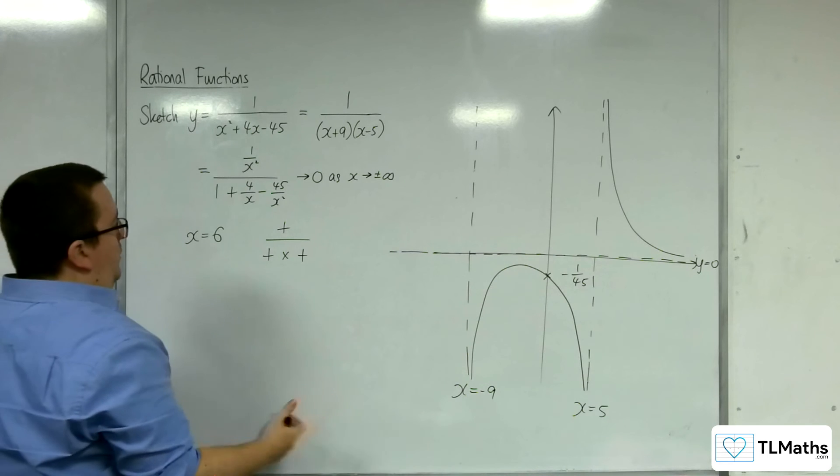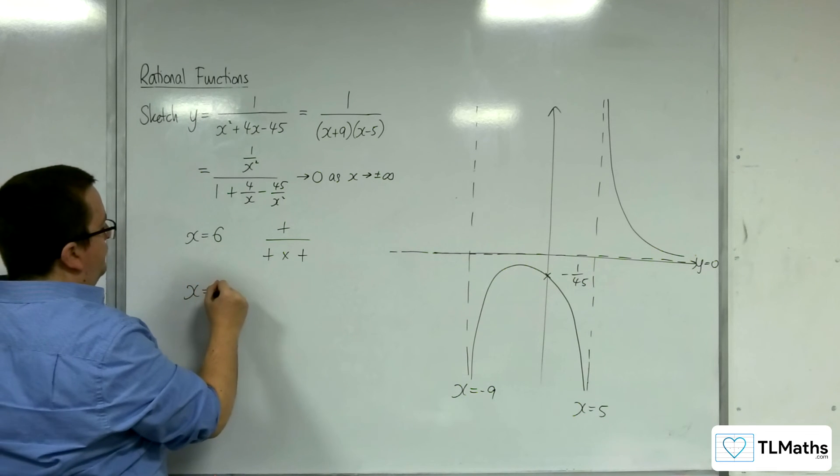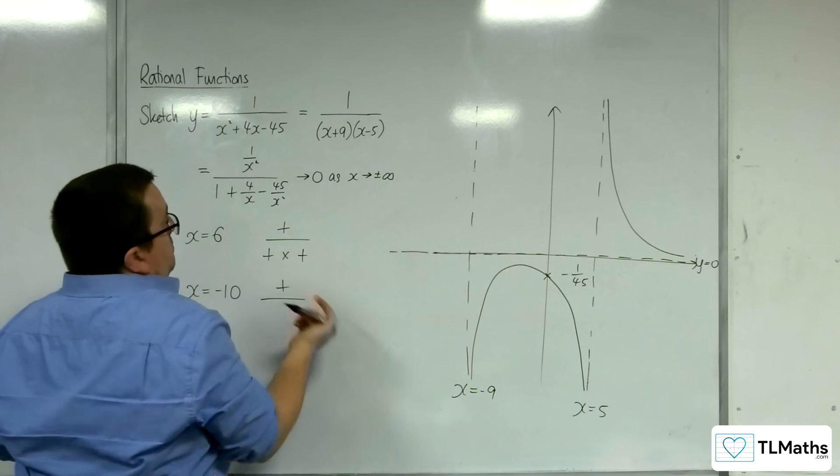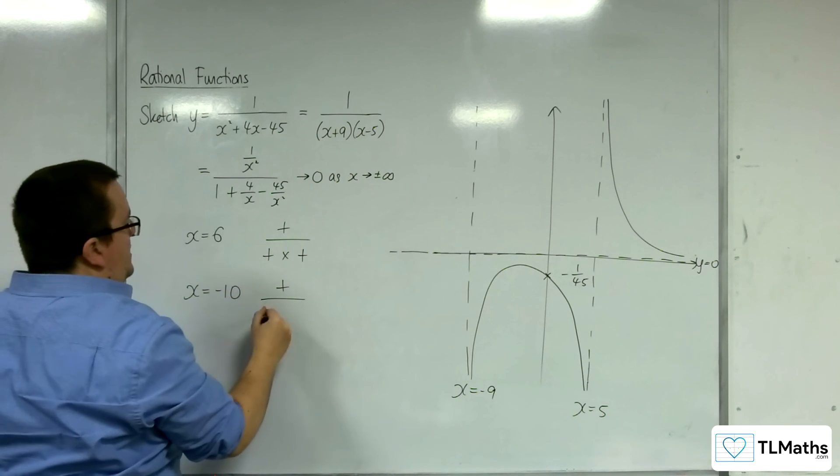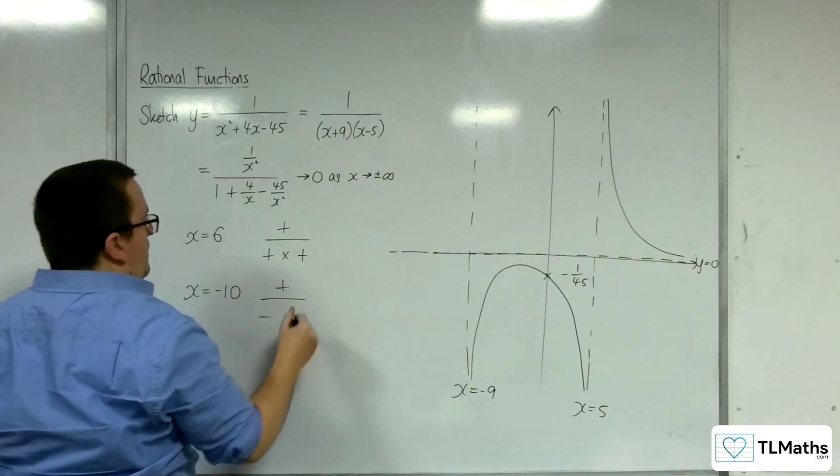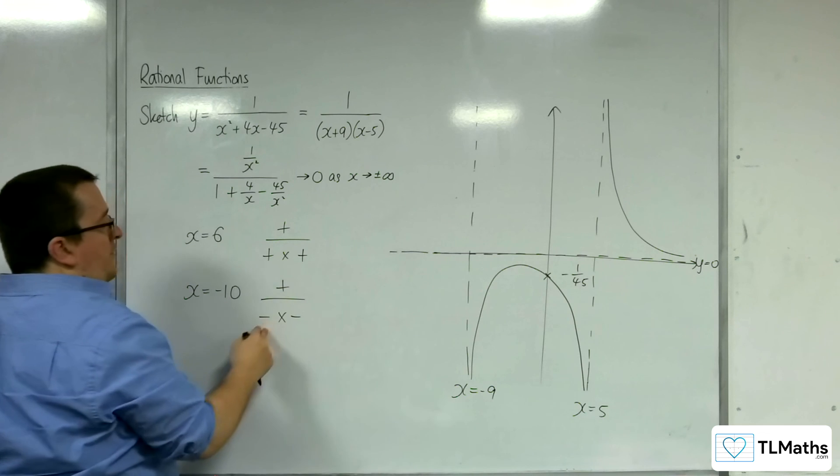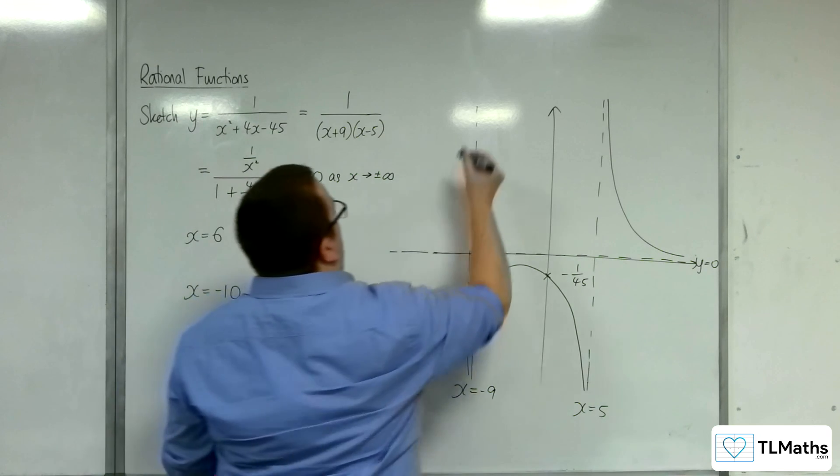And then for x equals minus 10, we've got a positive because of 1. Minus 10 plus 9 is negative. Minus 10 take away 5 is negative. Positive over positive. And so we're up here.